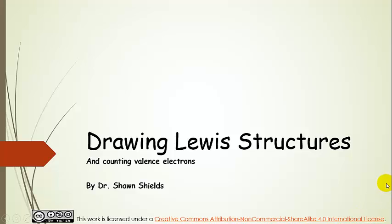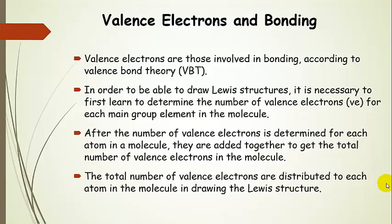Drawing Lewis structures and counting valence electrons. So before we get started in actually drawing Lewis structures, let's talk a little bit about valence electrons and why we need to count them up for a molecule. According to valence bond theory, valence electrons are those that are involved in bonding. In order to be able to draw our Lewis structures, we need to make sure that we can count up the number of valence electrons for each atom in the molecule and then add those together to get the total number of valence electrons. Basically what we're going to learn to do is to distribute those electrons to the atoms in a step-by-step fashion in order to draw the Lewis structure.